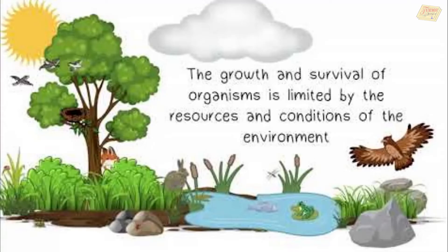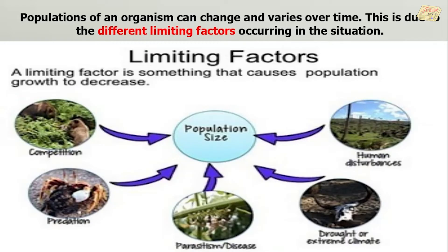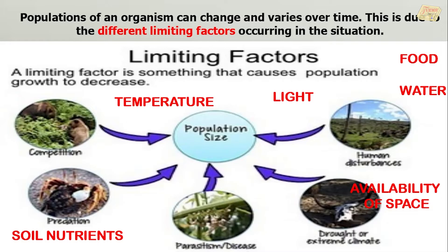The growth and survival of organisms is limited by the resources and conditions of the environment. Populations of an organism can change and vary over time. This is due to the different limiting factors occurring in the situation. Limiting factors are usually described as lack of particular resources like the availability of food, water, and space. Some of the reasons are predation, diseases, and migration. Light, temperature, and soil nutrients are also limiting factors because they help to identify what kind of organisms live in a certain area.